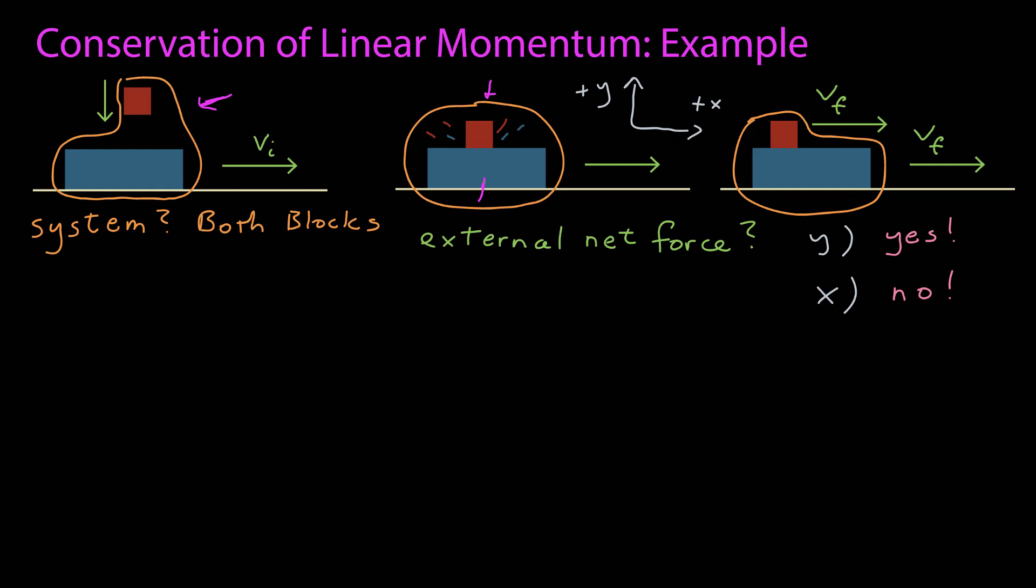However, what about the x-dimension? If I look at the whole system of the two blocks together, there are no forces on the system at all in the x-dimension. The surface between the ground and the blue block is frictionless. That means momentum is conserved in the x-dimension. So let's do that.